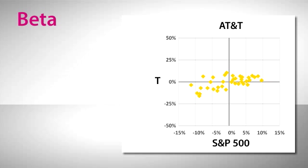Let's look at another example. Here's a similar chart for AT&T. Its beta is a lot less than Bank of America, only .64, and has a correlation of .34.